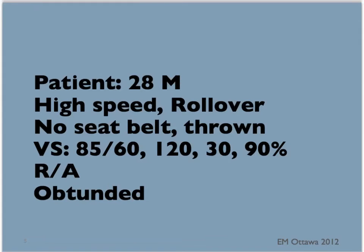The patient now arrives. This is a healthy 28-year-old involved in a high-speed rollover collision. He did not have a seat belt on and was thrown from the car. His vital signs are as follows: blood pressure is 80 over 60, heart rate of 120, respiratory rate of 30, and saturation is 90% on room air.